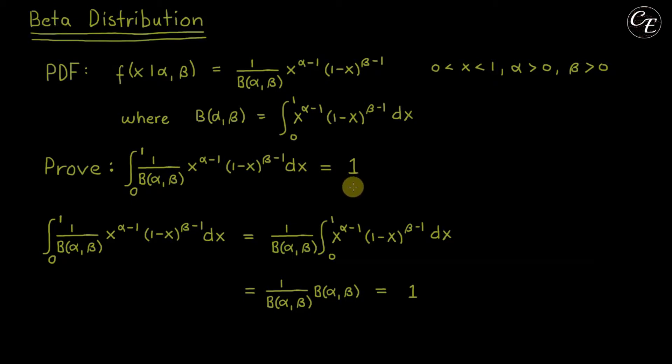Now to introduce this beta distribution, beta distribution is a continuous probability distribution with a probability density function or PDF shown here. The function here is a beta function which is defined to be this one.